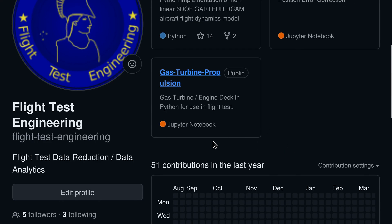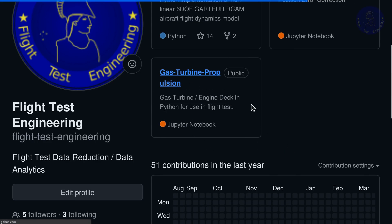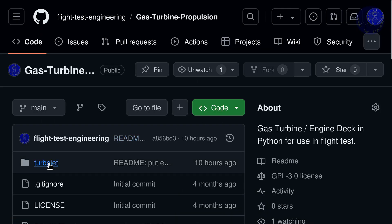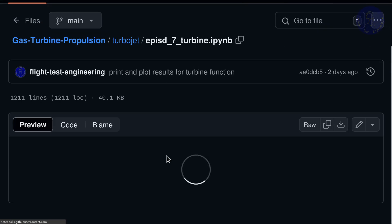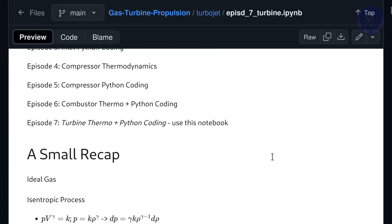On the channel's GitHub page you can access the gas turbine propulsion repo and the turbojet subfolder has this notebook episode 7 turbine. If you want to follow along you can or you can click on this button and download locally. Links in the description.